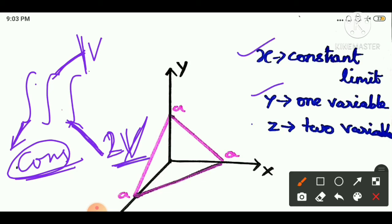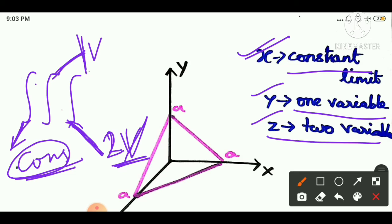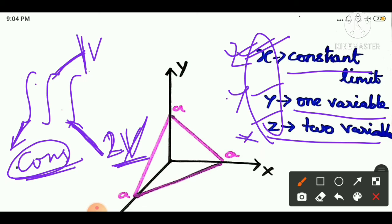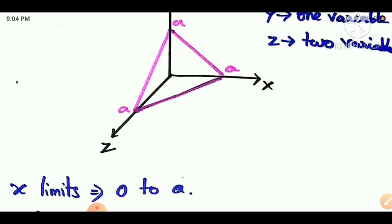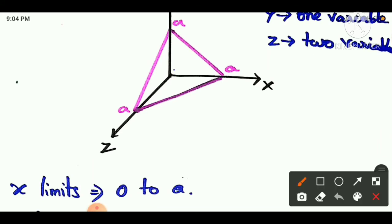In this example, x has constant limits from 0 to a, since the region extends from 0 to a along x. So the outermost integral is from 0 to a — that is the constant limit for x.